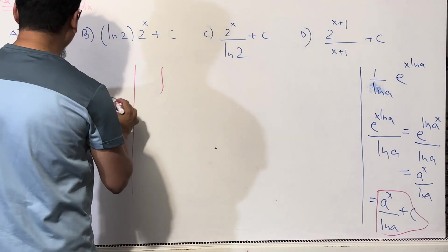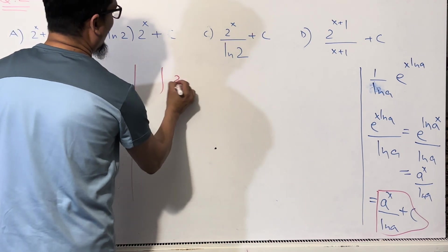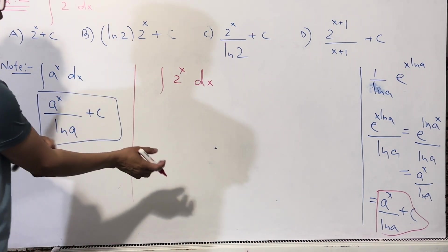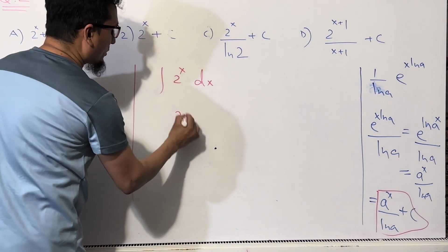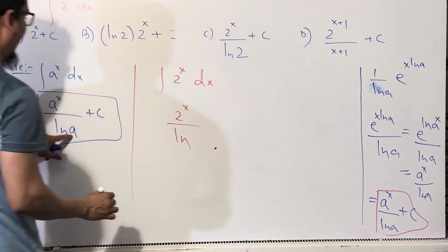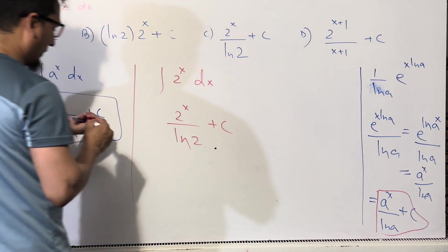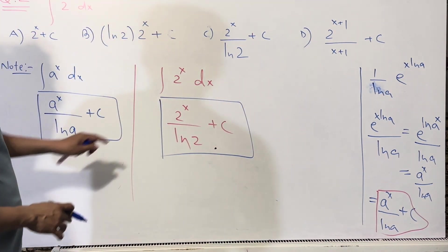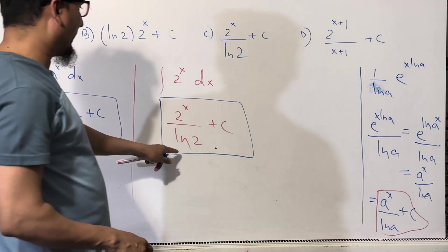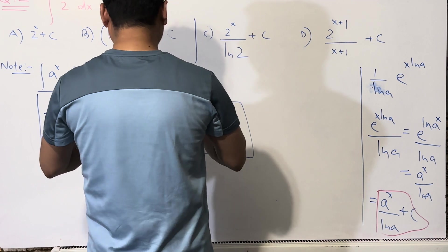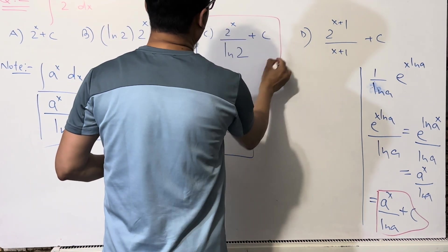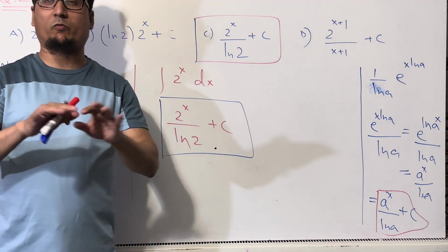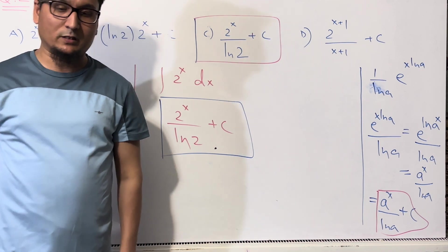So for our question, in place of a we have 2, so ∫2^x dx = 2^x / ln 2 + C. If you compare this with the options, the answer is option C: 2^x divided by ln 2 plus C. I hope you understand everything. If you still have a problem, just write in the comments and we will discuss it. Take care.